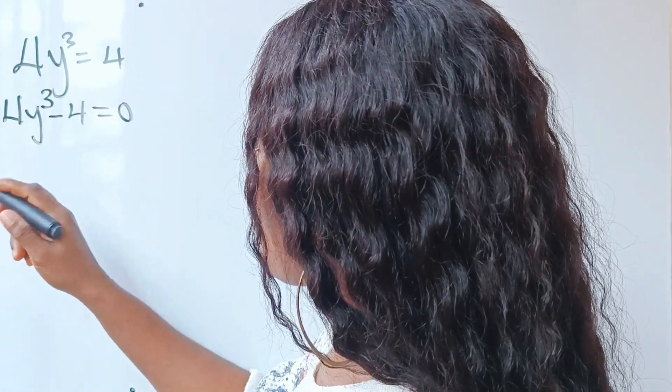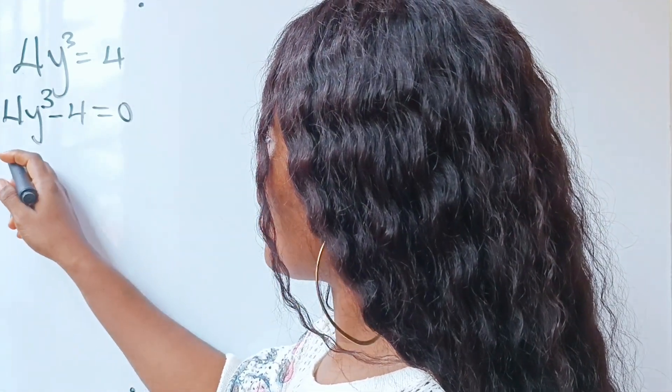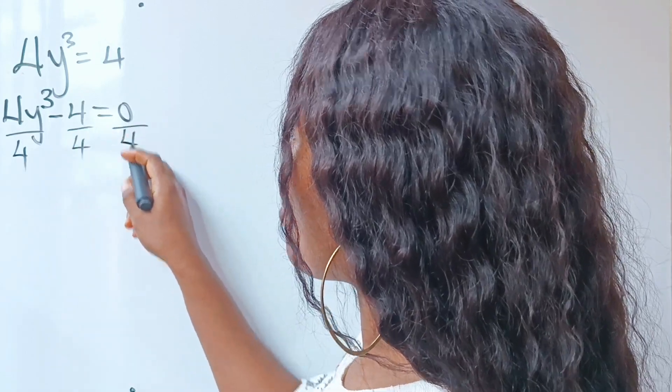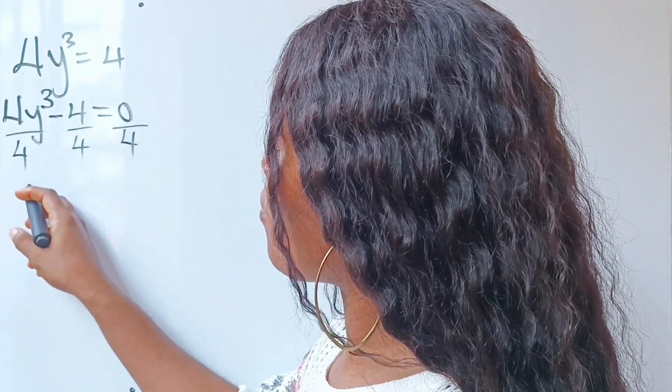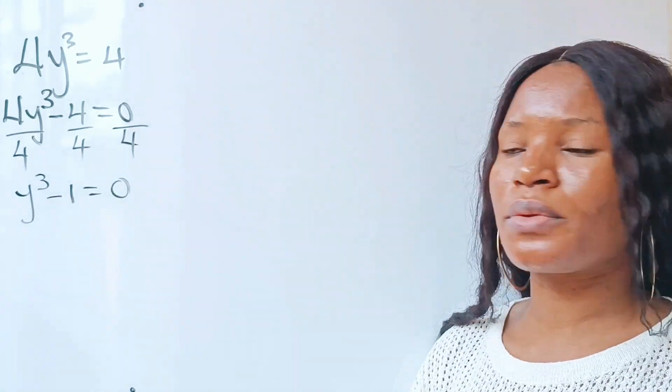So look at what we have here. Let's divide through by 4, so that will simplify the equation. When we do that, we have this divided by 4, this divided by 4, this divided by 4. So we have y³ - 1 = 0.